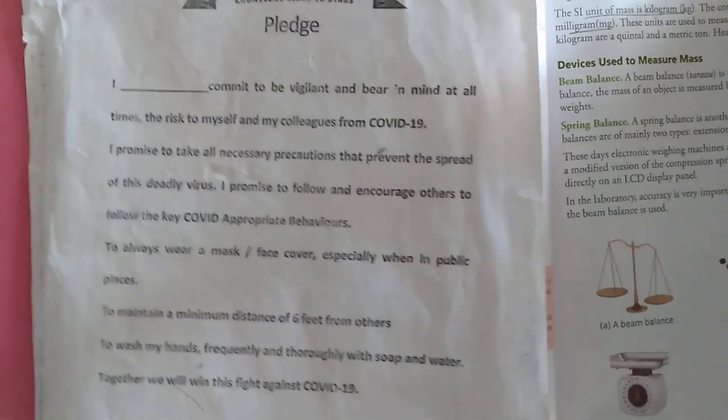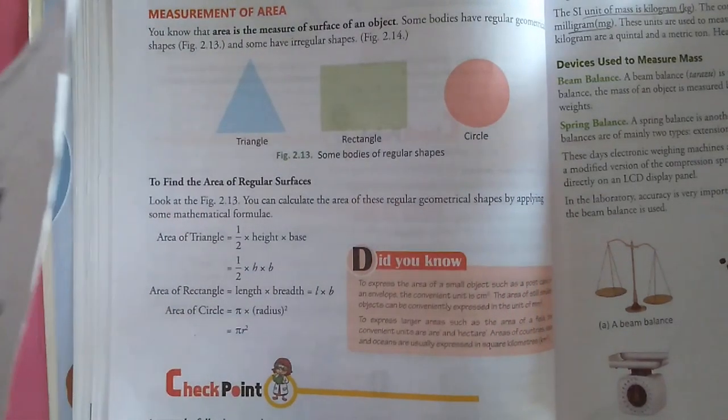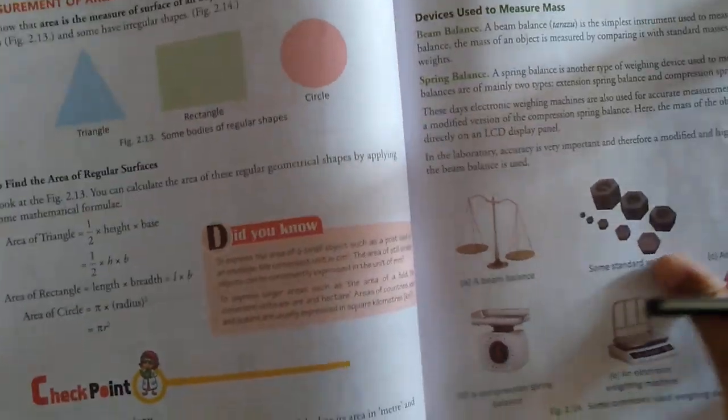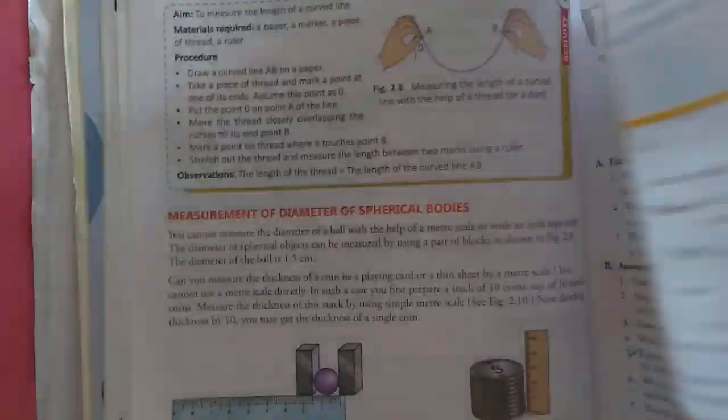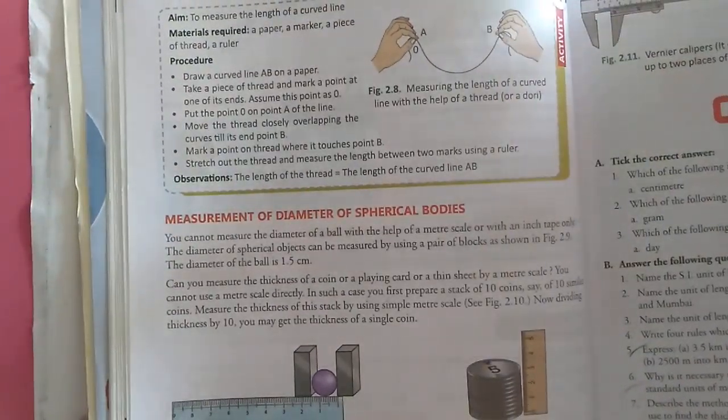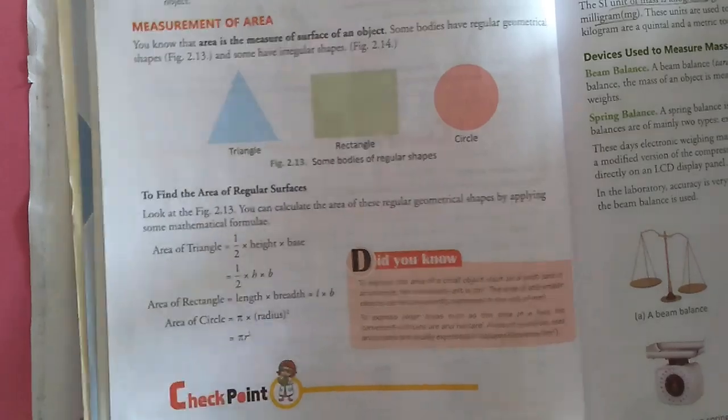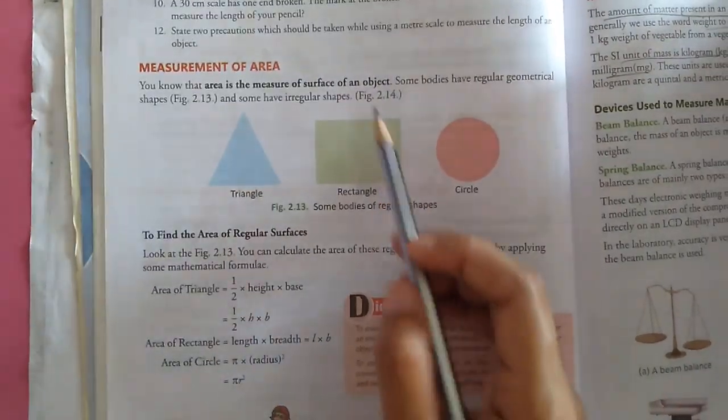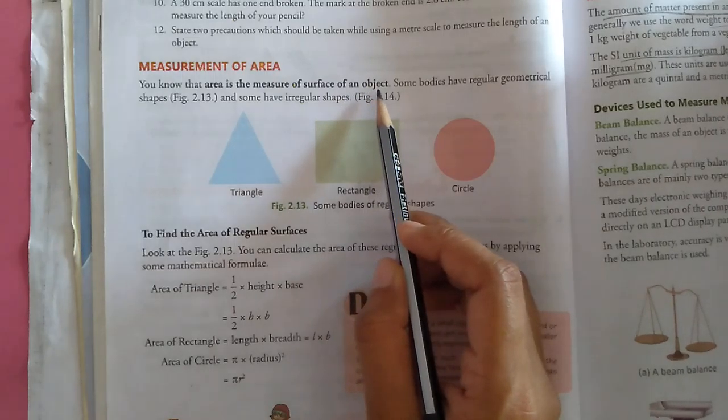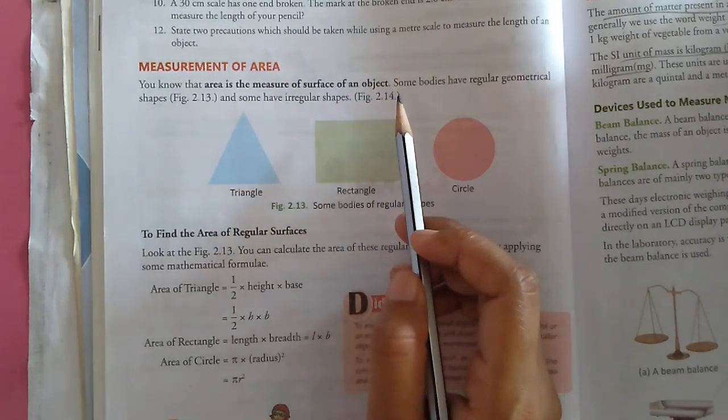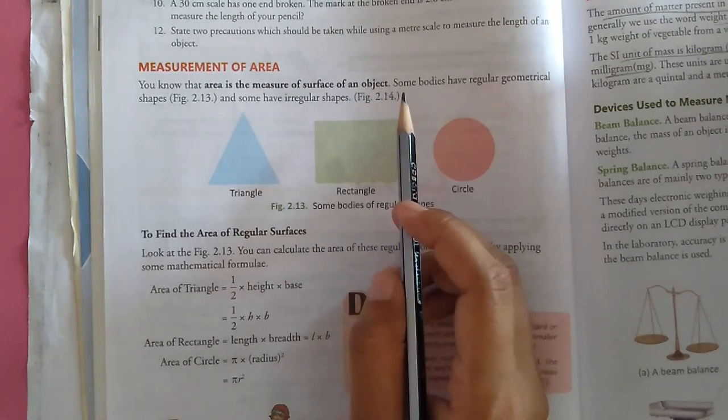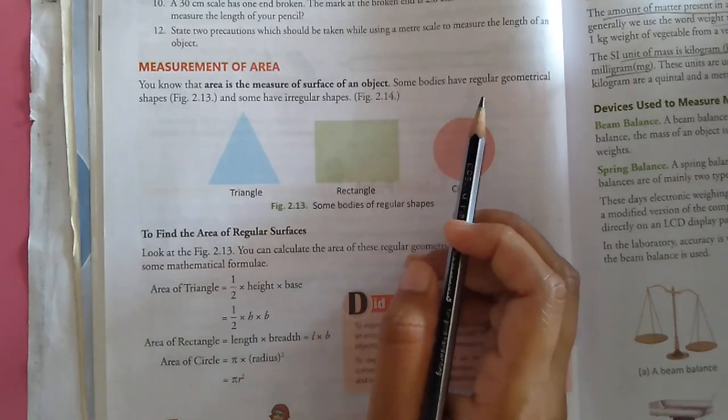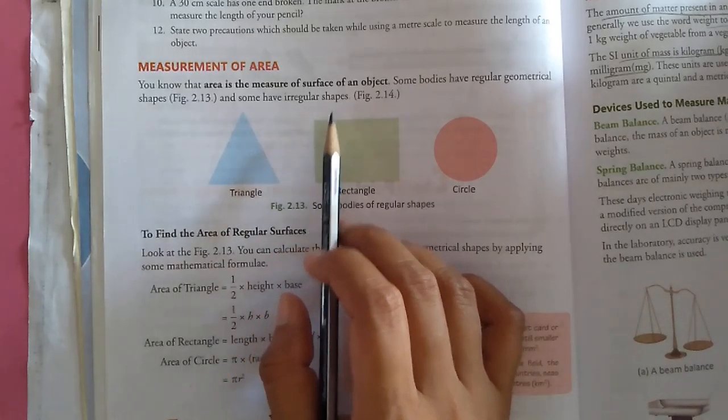So now let's start with physics. In the previous video, we have done up to measurement of diameter of spherical body. In this video, we will continue from measurement of area. Area is a measurement of surface of an object.